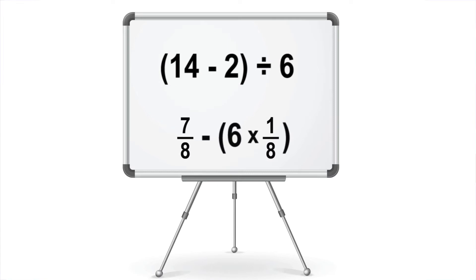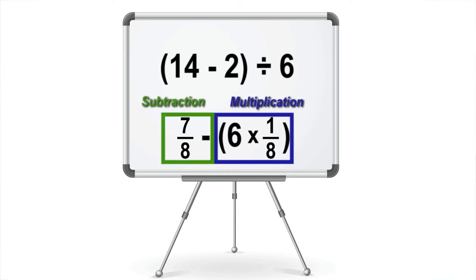In our next example, we see what appears to be a far more complex expression. As we verbally describe it, however, we find it follows a similar structure as our first example. 6 is multiplied by 1 eighth, the result of which is subtracted from 7 eighths.